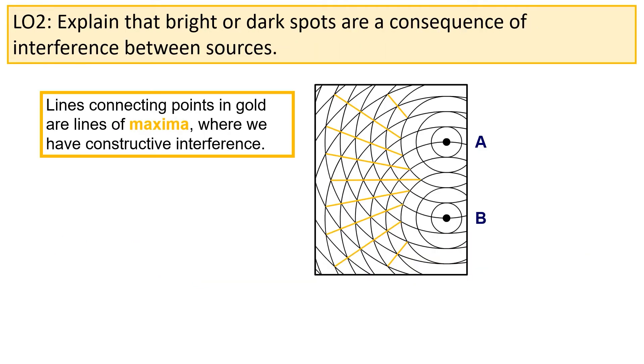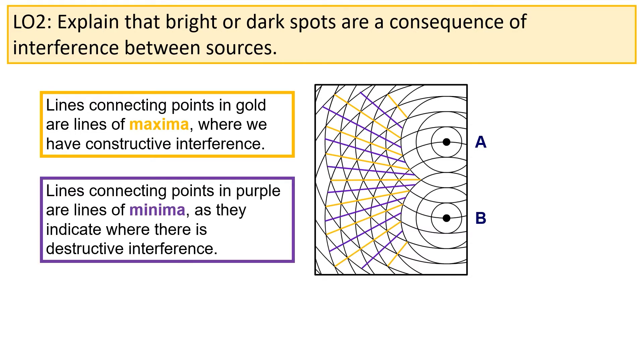There are going to be many of these points where we get constructive interference, as shown by the gold lines in the diagram. Similarly, there are going to be many points where we get destructive interference, as shown by the purple lines in the diagram.